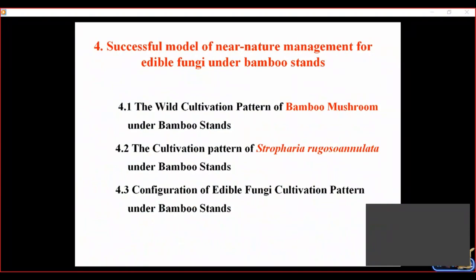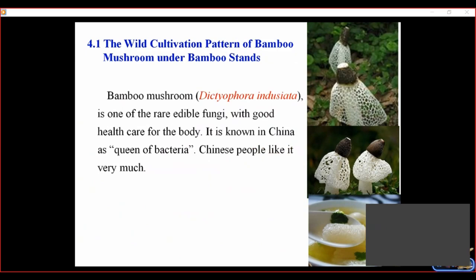Now I will focus on the fourth part: successful models of near-natural management for edible fungi under bamboo forestry. I will take two cultivation models — bamboo mushroom and Stropharia rugosoannulata — configured together in one year. First, I introduce bamboo mushroom cultivation model. Bamboo mushroom is one of the highly valued edible fungi with good health care properties for the body. It is known in China as the queen of the fungi, and Chinese people like it very much.